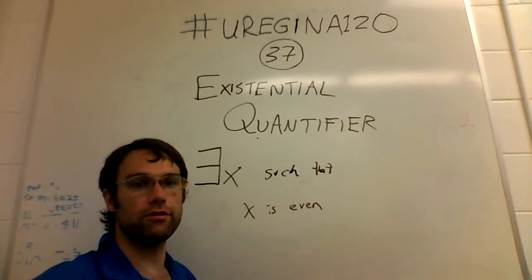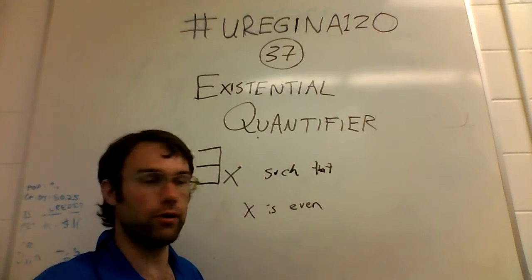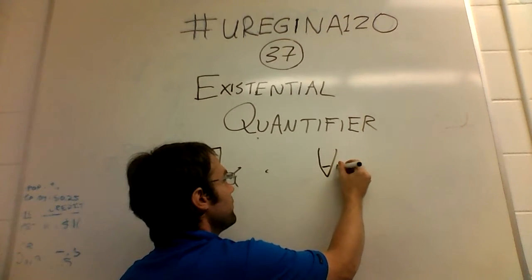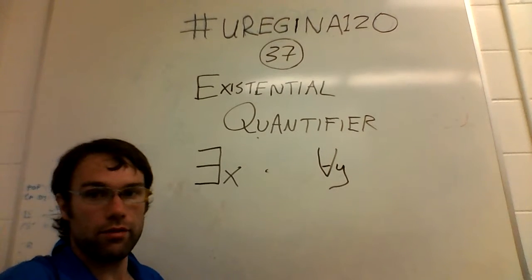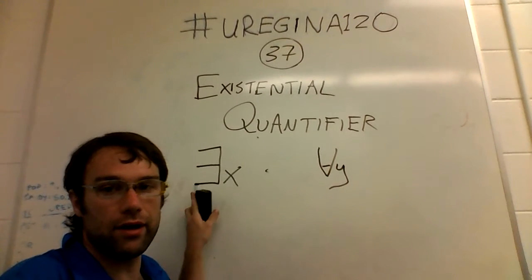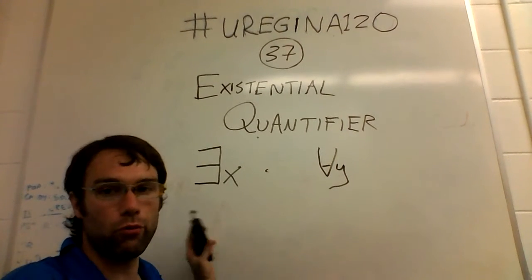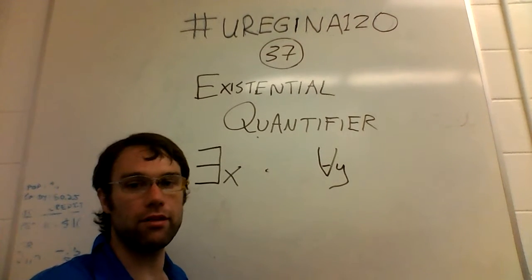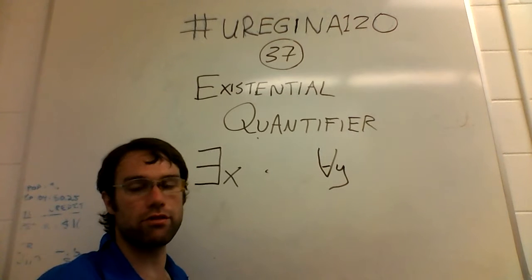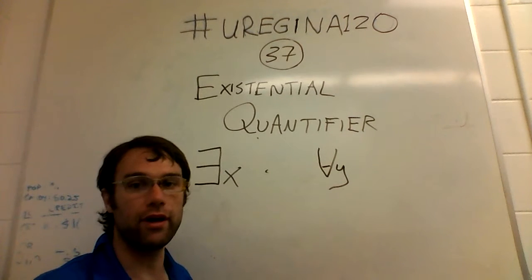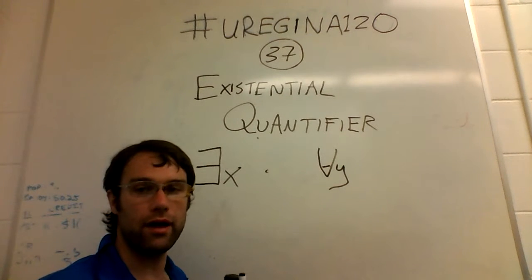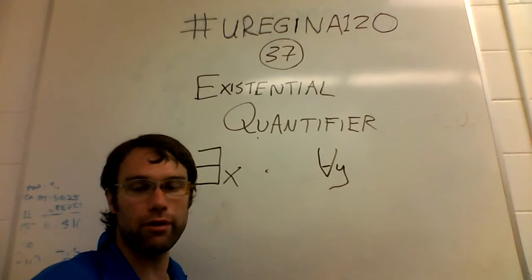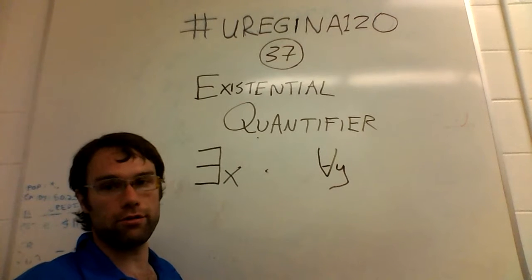Similar to the universal quantifier, these are both going to allow you to do multiple things. One, you're going to be able to define and talk about kinds of things, or collections or sets, once we get into set theory, of things. And in order to do so, these are going to allow you to say true or false things.